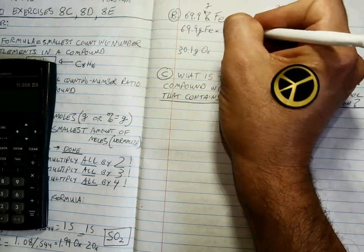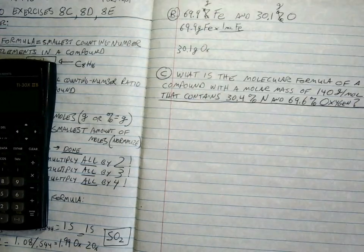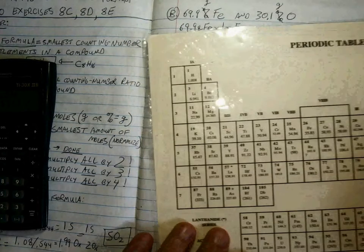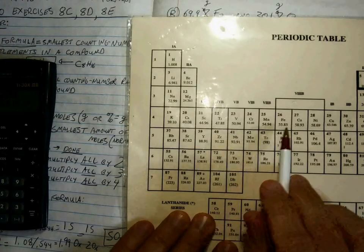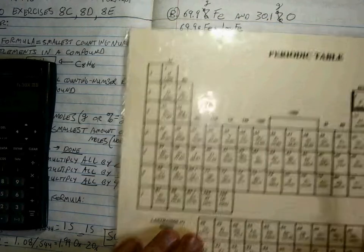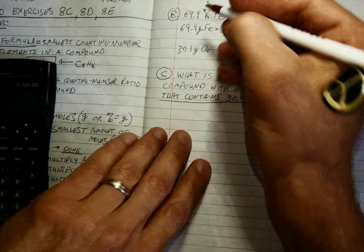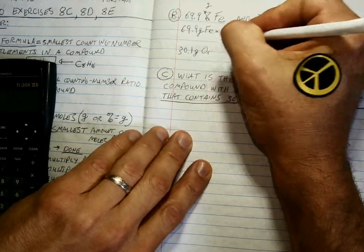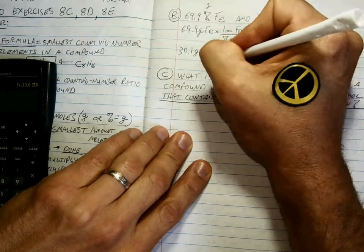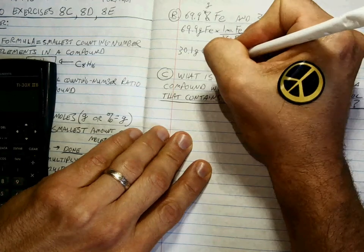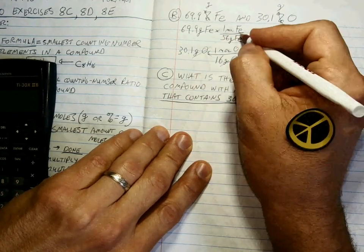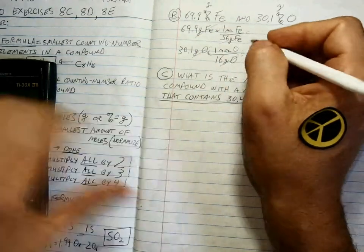One mole of iron. The molar mass of iron is, well, let's see. There it is. 55.85. Hey, 56 is close enough. For this problem. Okay. Oxygen is always 16. So when we cancel out, we get values for moles. What are those?